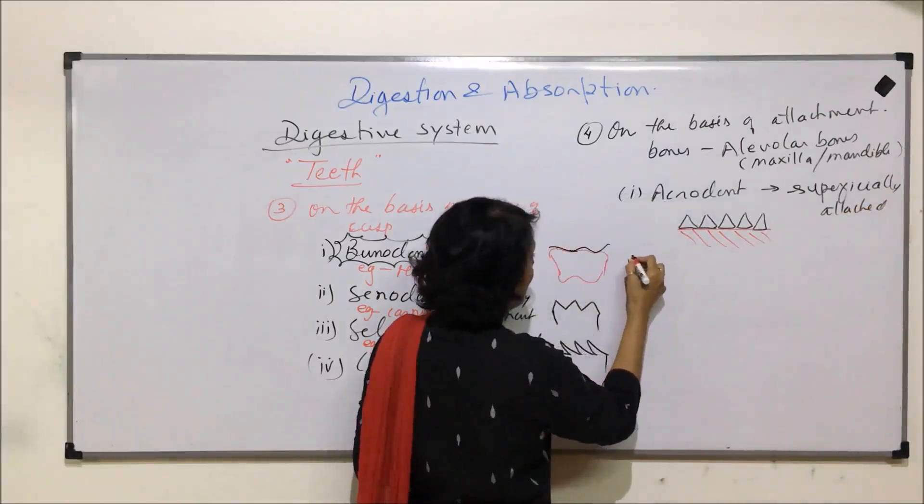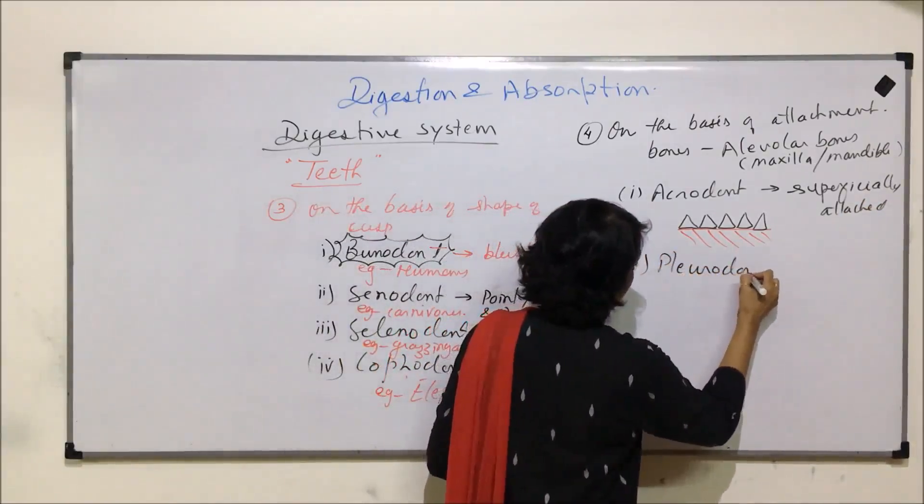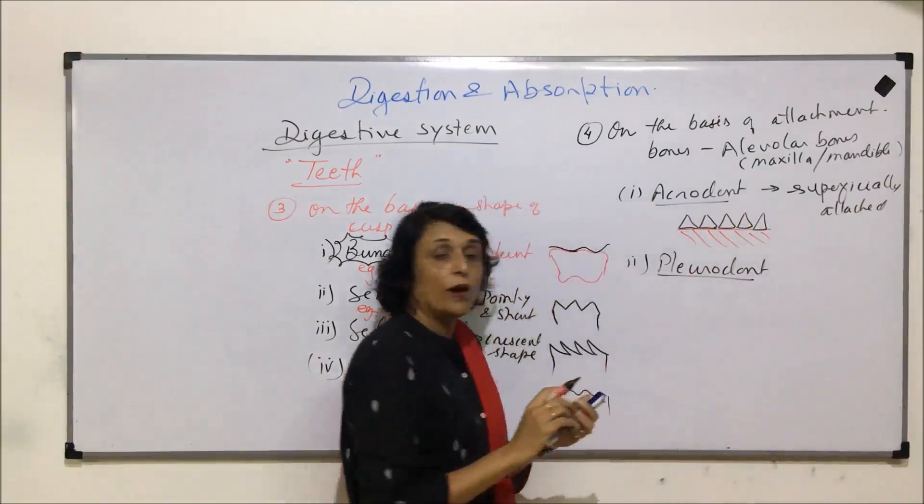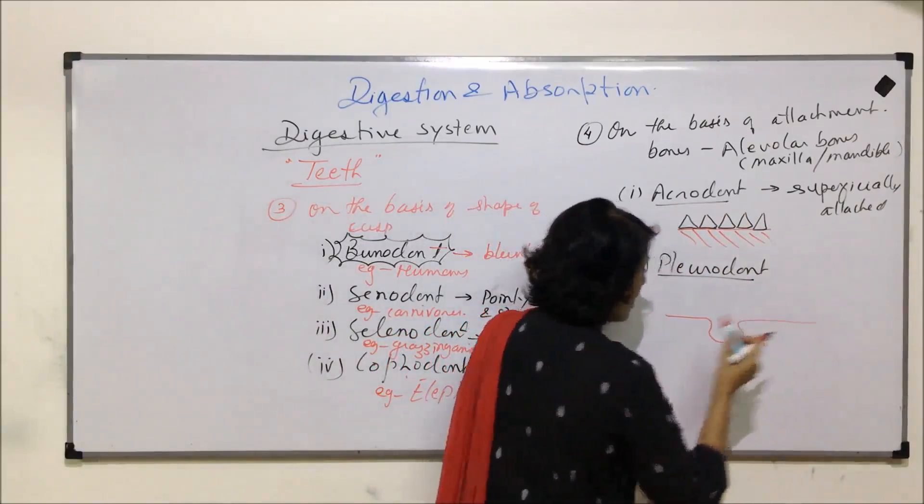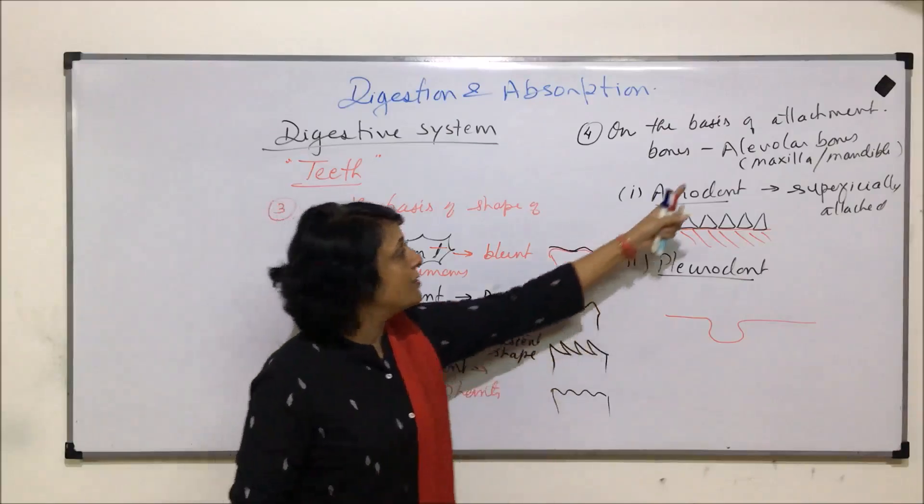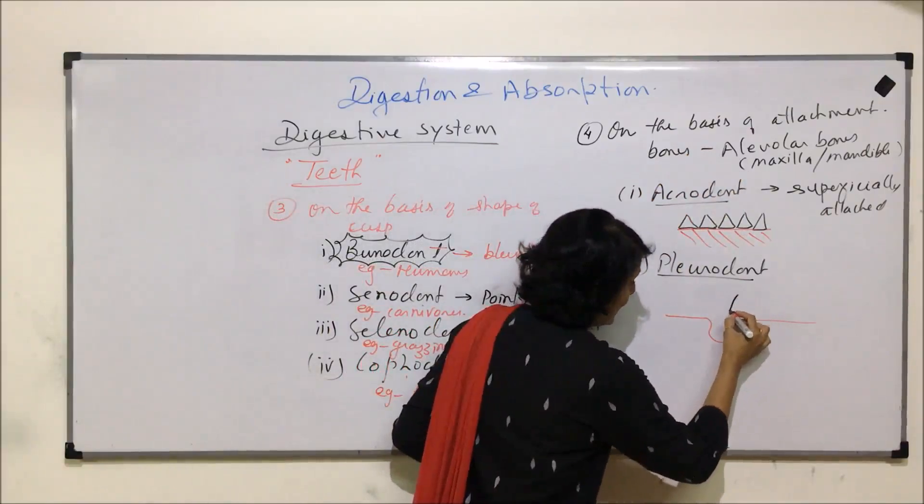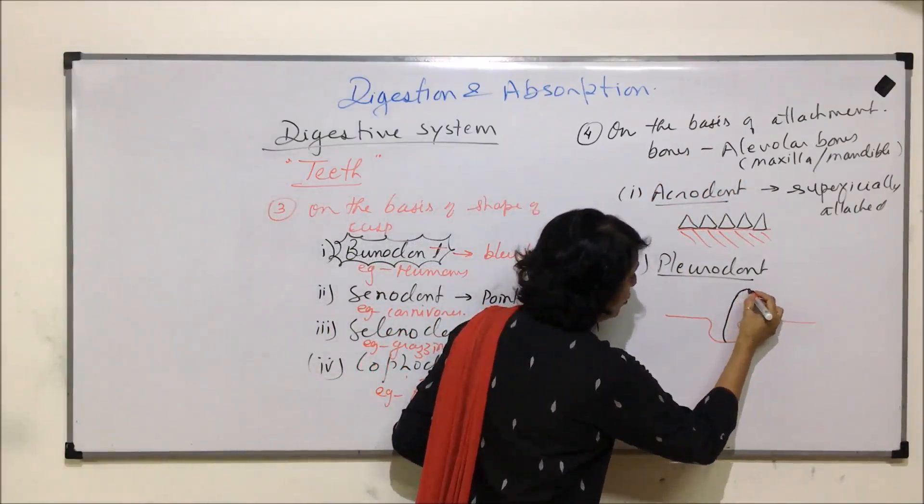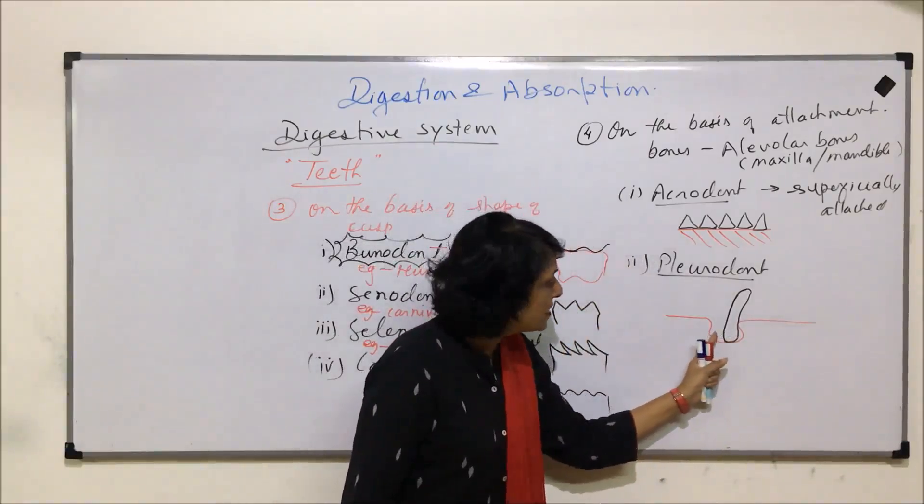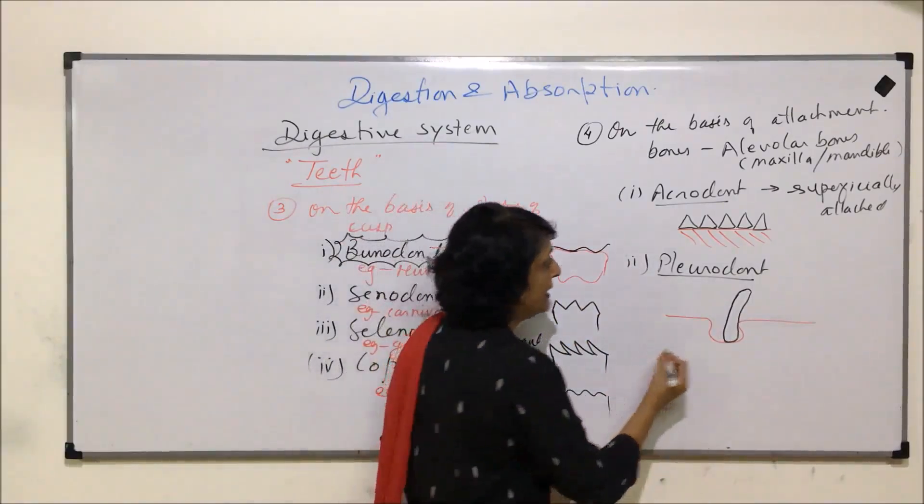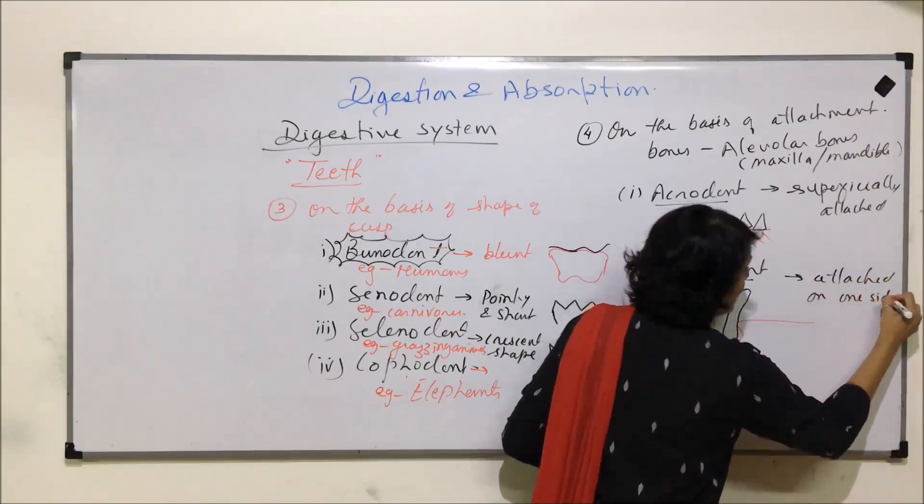The second classification on the basis of attachment, these are known as pleurodont. Pleurodont, again, there would be a bone and the bone has such kind of sockets. These sockets are known as alveoli and so we call this bone the alveolar bone. The teeth are attached partially. Here we are showing one tooth and it is attached in this socket only partially. That means it is loose from the other side.